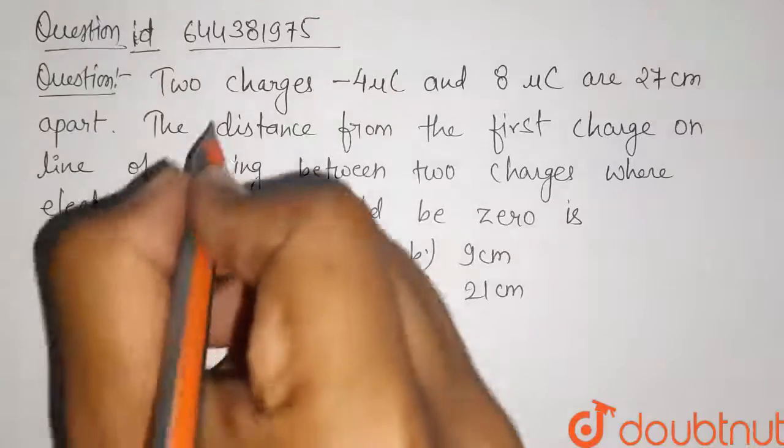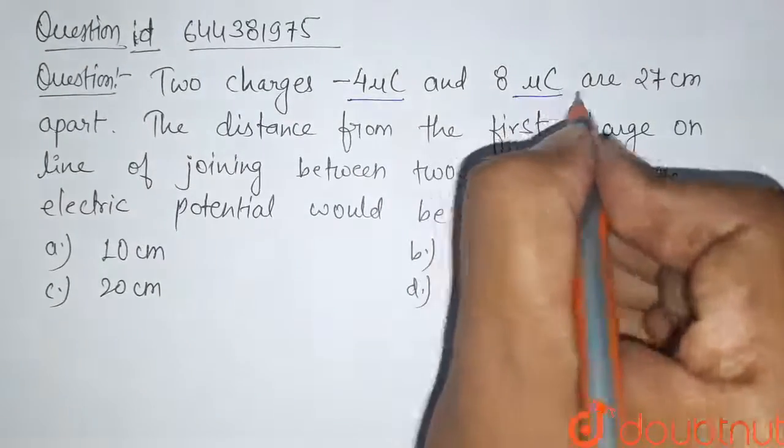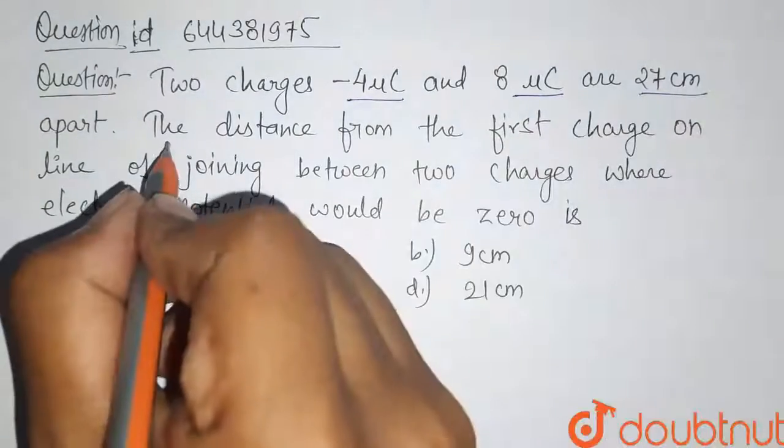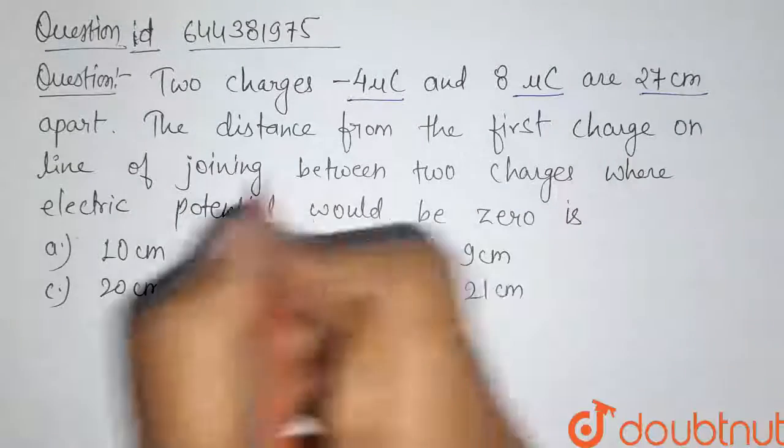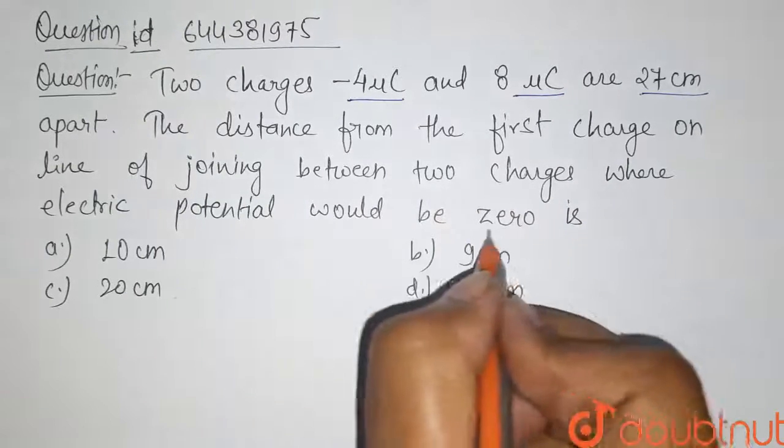Students, here is our question. Two charges minus four micro coulomb and eight micro coulomb are 27 centimeter apart. The distance from the first charge on the line of joining between two charges where electric potential will be zero is.